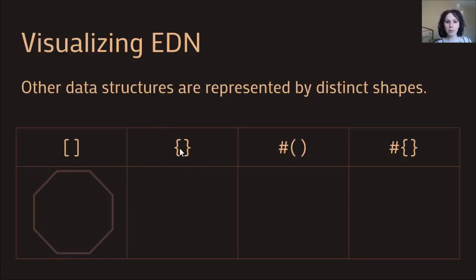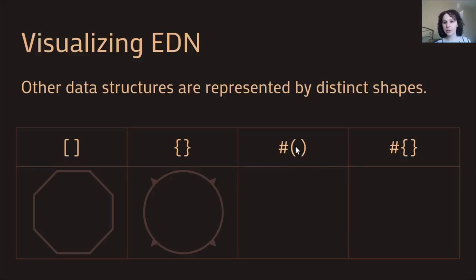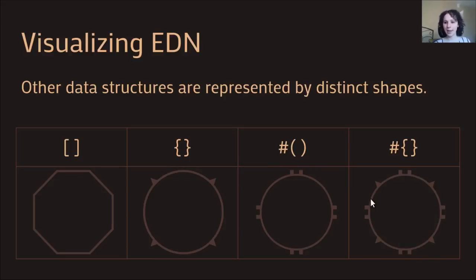Clojure also has maps, represented with curly braces, and in Vlojure maps are represented as circles with little spikes coming out of each side, reminiscent of the spikes on curly braces. Function literals have special syntax in Clojure, and in Vlojure that's reflected by a circle with little lines coming out of each side. Sets are syntactically a combination of maps and function literals, so in Vlojure they get represented as a circle with both the spikes from the map and the lines from the function literal. All elements inside these structures have the first element up top and the remainder in counterclockwise order.